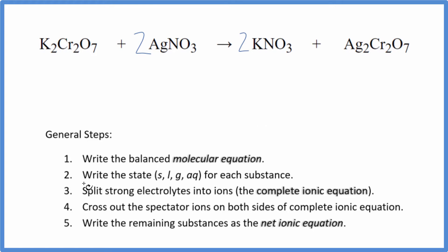Now we need to write the state for each substance. Potassium compounds are soluble. We write aq. It's going to dissolve in water. Nitrates are very soluble. Here we have another nitrate, so that is going to be soluble. It dissociates into its ions.